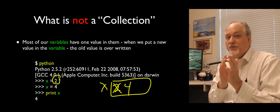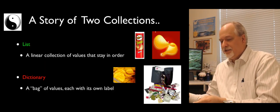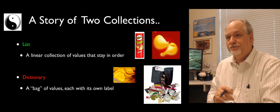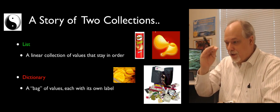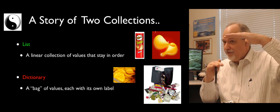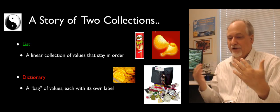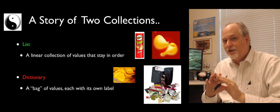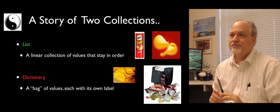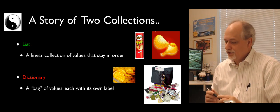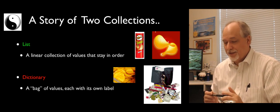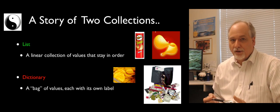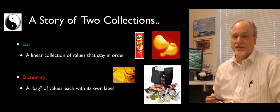The difference between a list and a dictionary is how the values are structured within that single variable. The list is a linear collection indexed by integers 0, 1, 2, 3 — very much like a Pringles can where things are stacked nicely on top of each other. Dictionaries are very powerful, and their power comes from a different way of organizing internally.